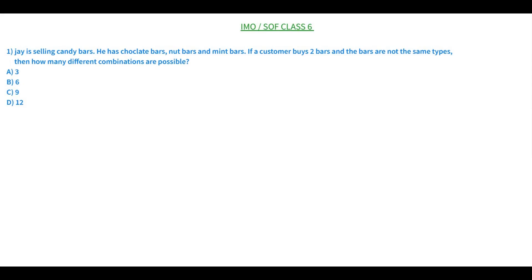Let's see the first question for today. Jay is selling candy bars. He has chocolate bars, nut bars, and mint bars. If a customer buys two bars and the bars are not of the same type, then how many different combinations are possible? As I have always told you, whenever you have a word problem, break it into small parts. Jay has three types of bars: chocolate, nut, and mint. The customer is going to buy any two bars, but they must be different varieties.